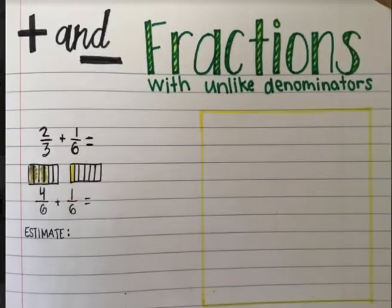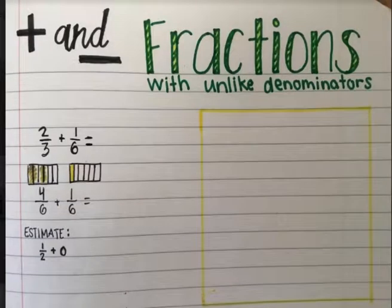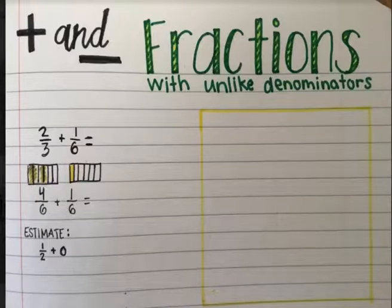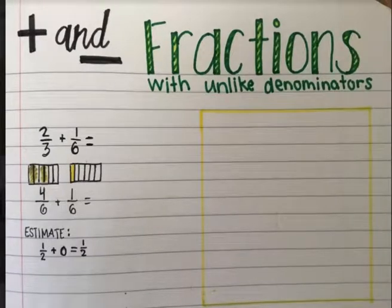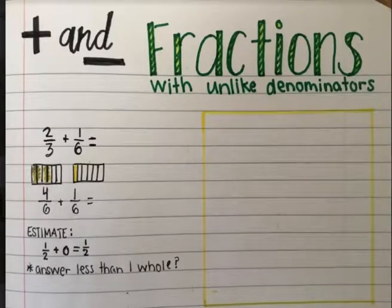Before I do that, I want to estimate. Estimation helps to check to make sure our answer is reasonable. If I look at four sixths, that's about a half. And one sixth is more than zero, but it's closest to zero. So my estimation would be one half and zero, so it's probably going to be somewhere around one half. Something important to remember is that my answer must be less than a whole, because if I have something around a half and something really close to zero, I can't get more than a whole.